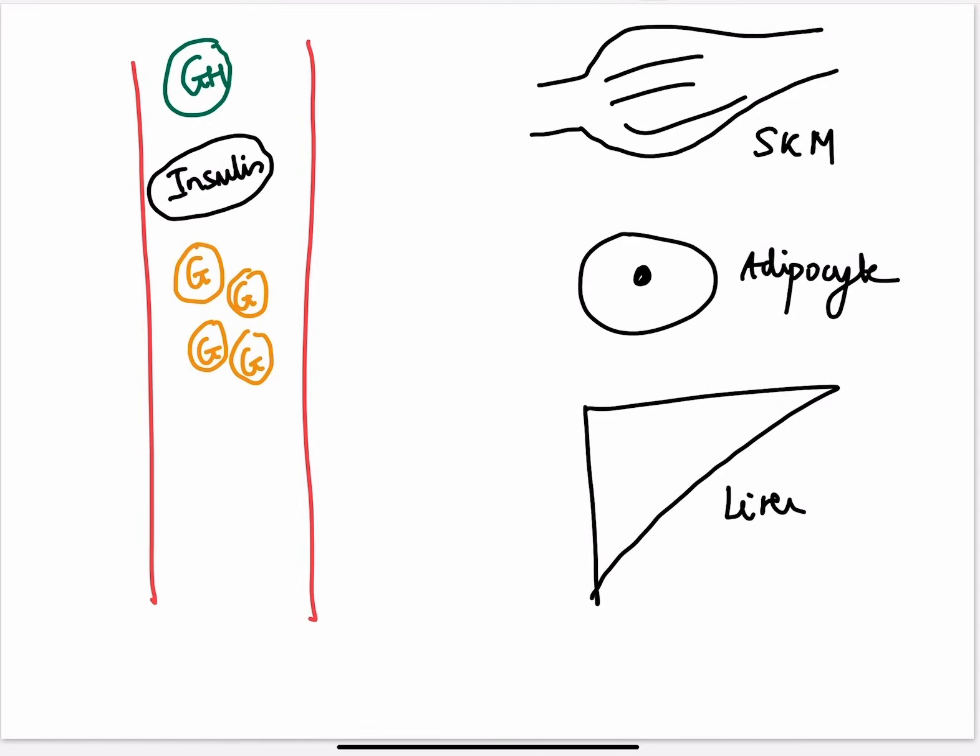The effects of growth hormone on carbohydrate metabolism are called diabetogenic. They are called diabetogenic because of something called insulin resistance.